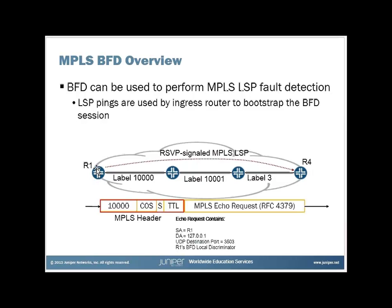LSP pings are used on the ingress router to bootstrap the BFD session. When R1 wants to establish a BFD session with R4 for this MPLS-LSP, it encapsulates in an MPLS header — here showing the packet on this link with MPLS label 10000. It encapsulates an MPLS echo request packet defined in RFC 4379. This echo request has a source address of R1, a destination address of 127.0.0.1, a UDP port of 3503, and it contains R1's BFD local discriminator for this particular LSP.